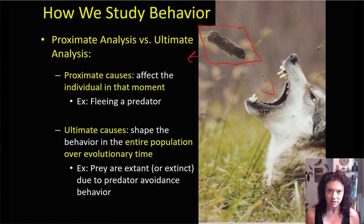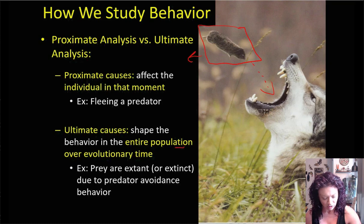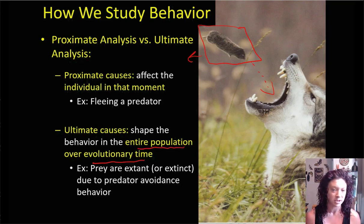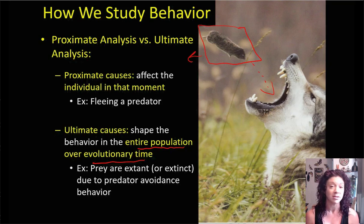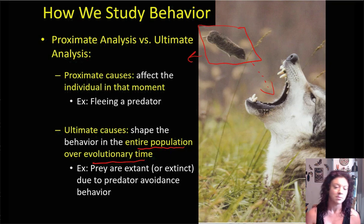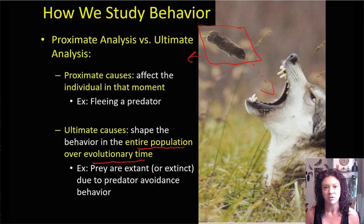We can also ask what the ultimate causes are of this behavior — why do prey animals flee predators in general? What causes shape the behavior in the entire population over evolutionary time? All voles exhibit this behavior of fleeing a predator. The voles we see today still exist because they've been able to avoid predators long enough to have babies and replace themselves. Voles have been fleeing predators for millions of years; if they didn't have this behavior, they would have died out. So the proximate reason is the vole itself doesn't want to die, but ultimately that desire triggered the behavior of fleeing, which evolved to keep voles as a group alive.